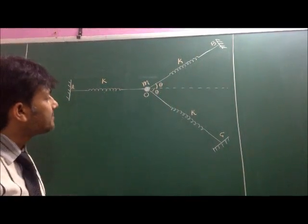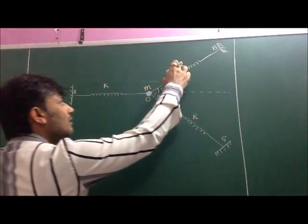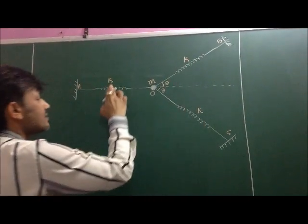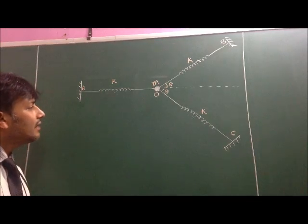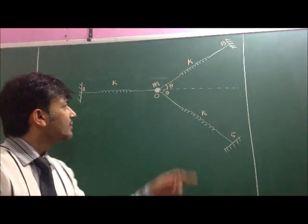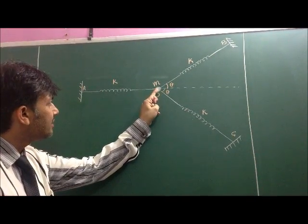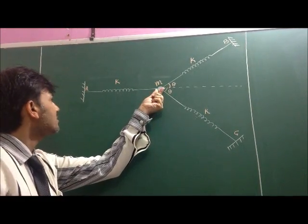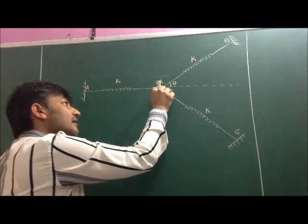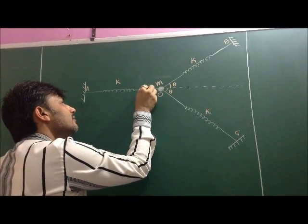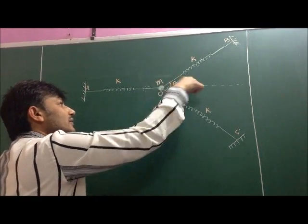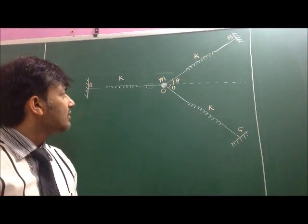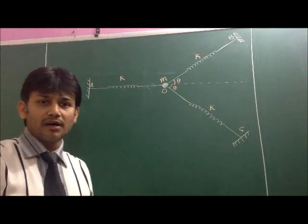This is a system of springs. All the springs are of the same type, meaning the force constant of all the springs is equal. The question asks us to find the time period for the oscillation of mass M if it is displaced towards point A. It will perform simple harmonic motion and we want to find the time period for this motion.